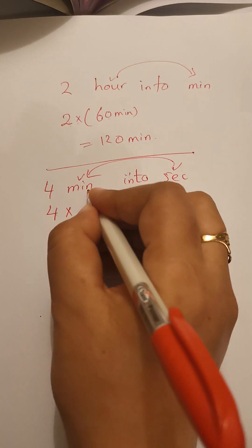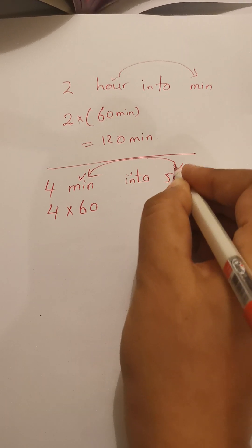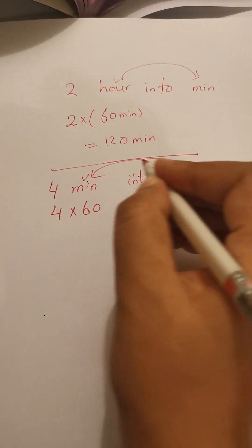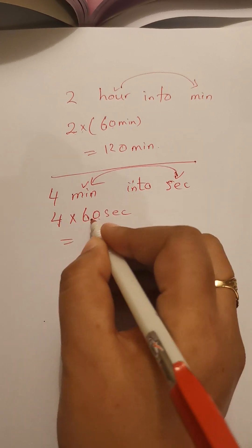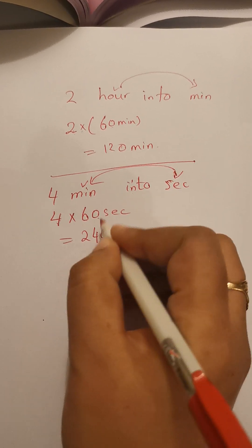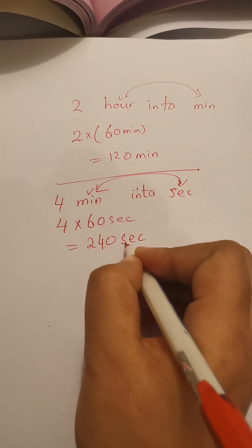60 seconds. 4 times 60 is 240. So in 4 minutes you have 240 seconds.